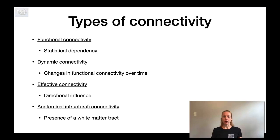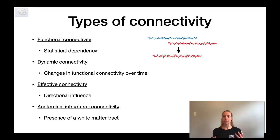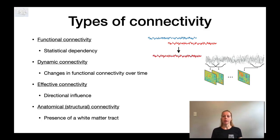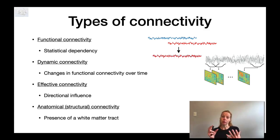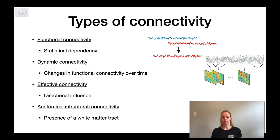Before moving on, I want to highlight that there are a number of different types of connectivity. Functional connectivity is the idea of statistical dependencies between time series — you take time series from one region and another region and measure how similar they are. Another aspect is dynamic connectivity or time-varying connectivity, a similar concept but looking at fluctuations in connectivity over time. In the figure here you can see that separate parts of the time series are considered to look at changes in functional connectivity.